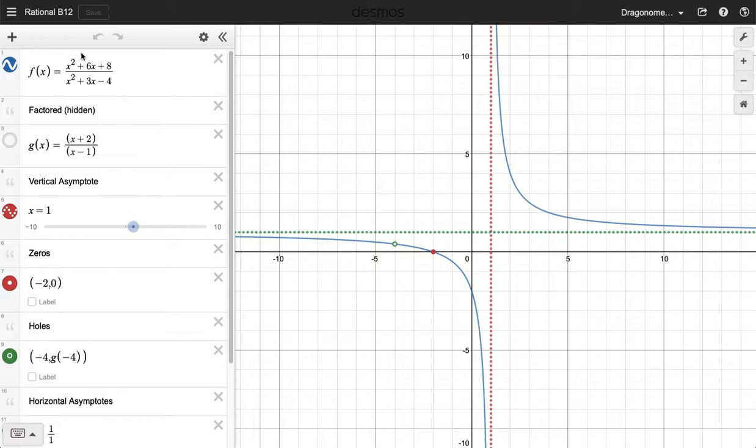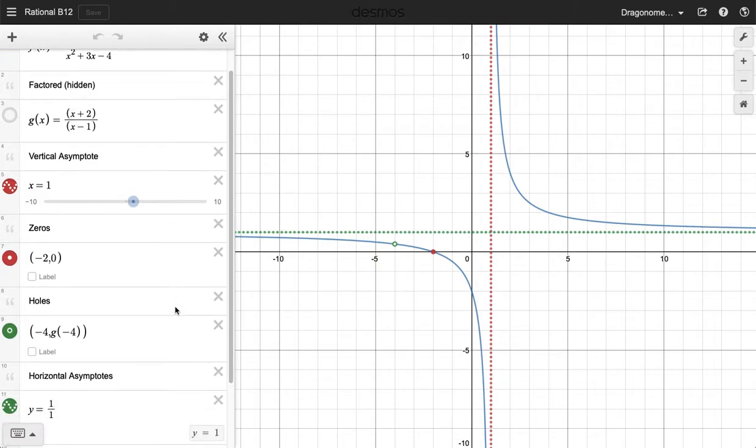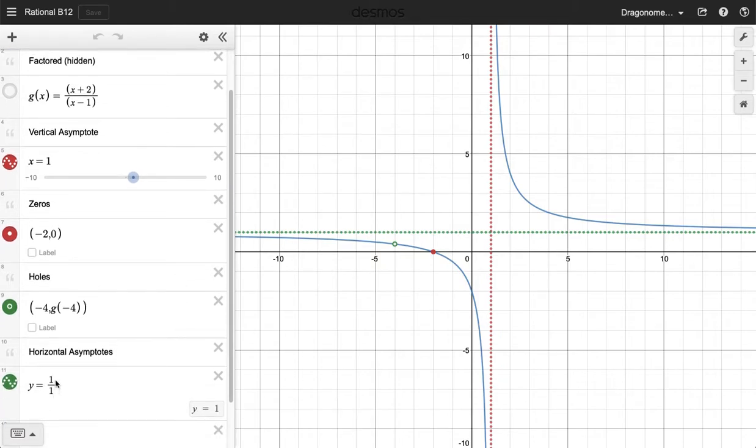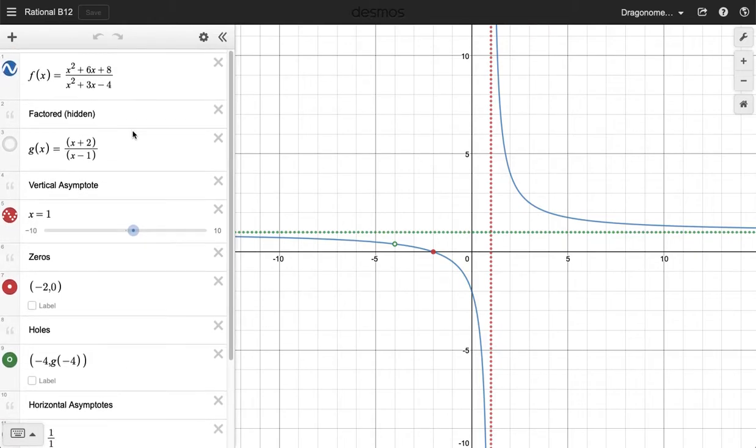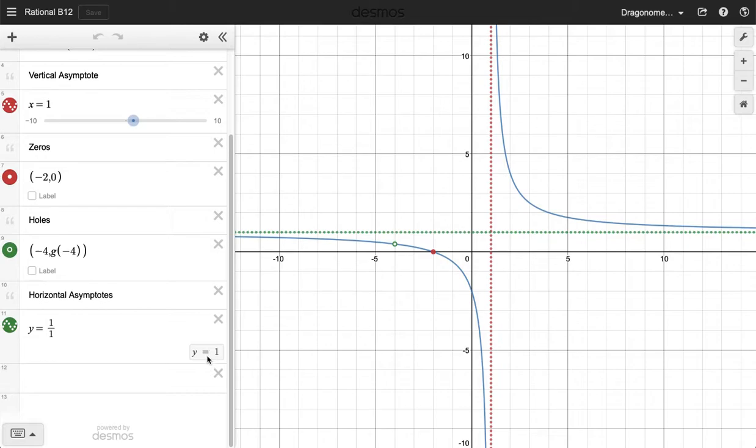And then because this polynomial, these two polynomials in the numerator and denominator have the same degree, they are both second degree polynomials, we know that we're going to have a horizontal asymptote at the ratio of the leading coefficients. And you'll see here that the coefficients are 1 and 1 because the leading coefficients are 1. And all that tells us is that we have a horizontal asymptote here at y equals 1. It's the green line right here.